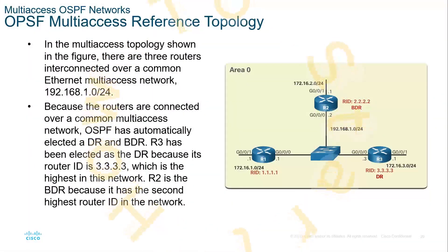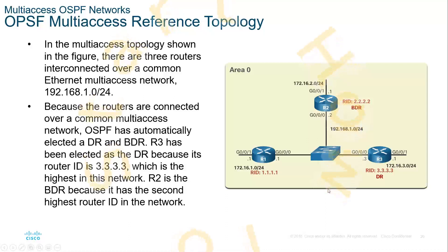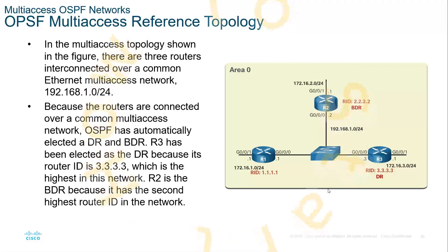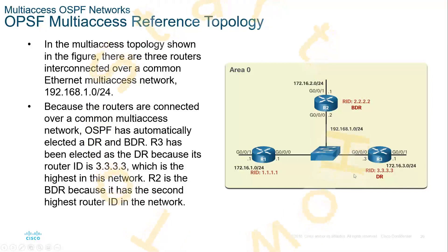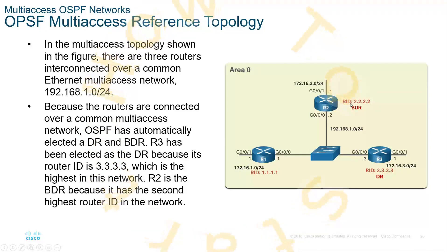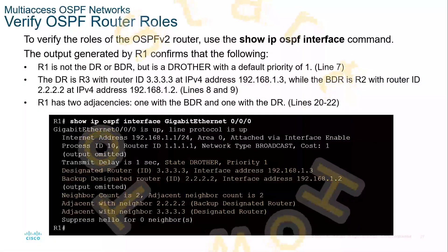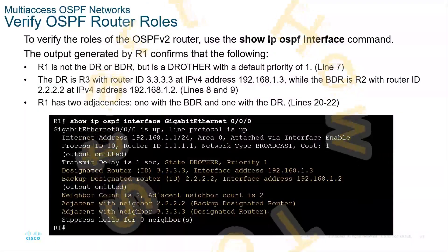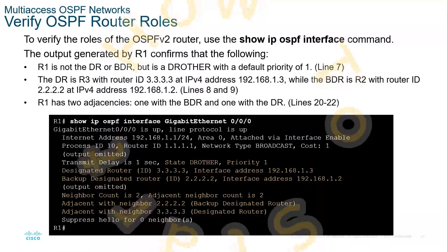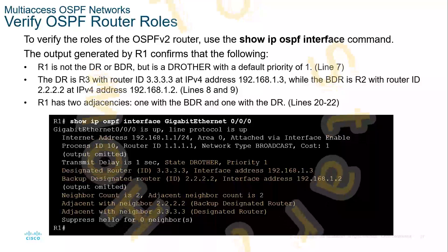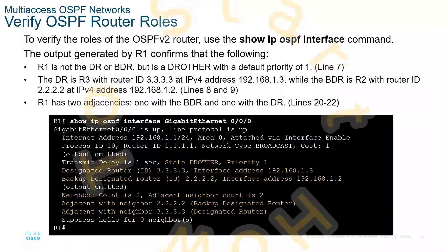In a multi-access topology, here we have three routers connected to some form of layer 2 network. Because the routers are connected over a common network, OSPF has automatically elected a DR and BDR. Looking at the router IDs, the highest router ID will become the DR. The second highest will become the backup DR or BDR. To verify the roles, we can do a show IP OSPF interface.